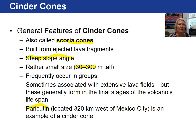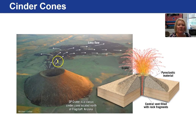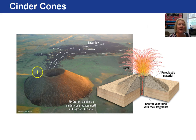Paracutin is unusual in that it erupted for almost ten years; generally a cinder cone will erupt for about one year and then becomes extinct. Here is SP Crater, a cinder cone north of Flagstaff, Arizona — part of a whole field of cinder cones. You can see it has also erupted a lava flow in addition to the pyroclastic cinders ejected to the flanks of the volcano.